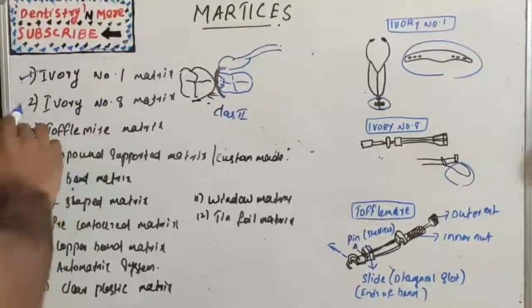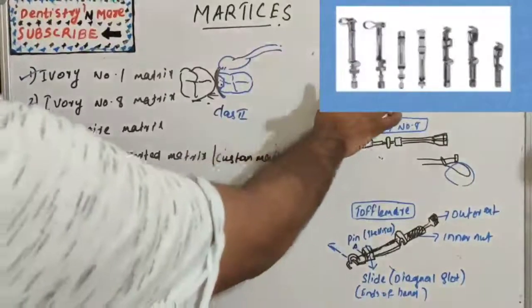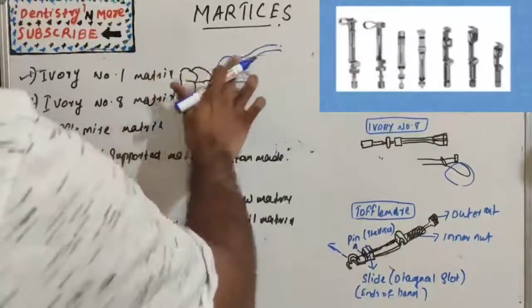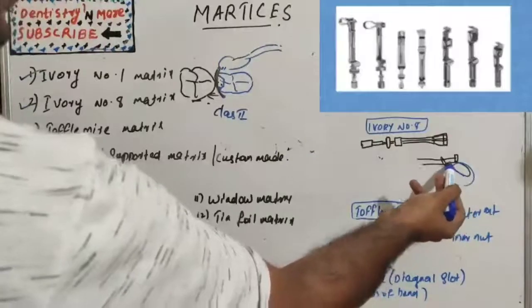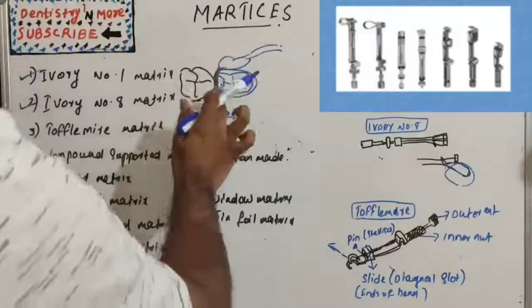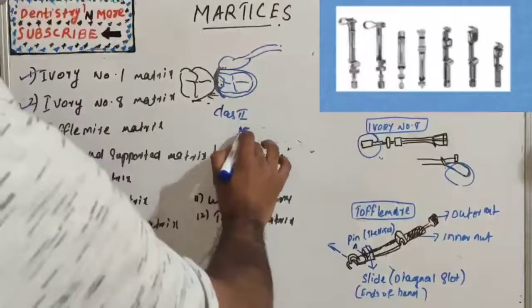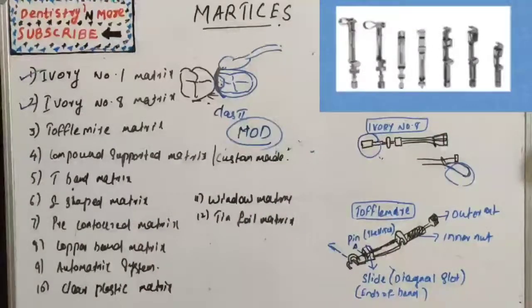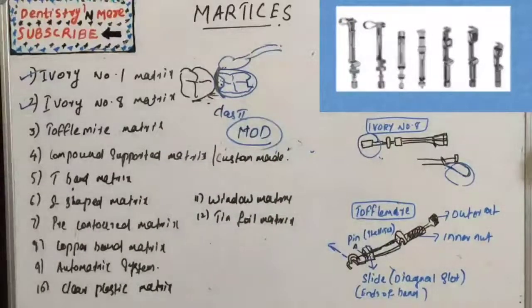Ivory number eight matrix consists of a band that encircles the entire crown of the tooth — unlike number one which covers only one proximal side, number eight encircles completely. The band is attached to the retainer and the circumference can be adjusted by the adjusting screws. It is indicated in unilateral and bilateral class 2 preparations, especially mesio-occlusal-distal (MOD) preparations.